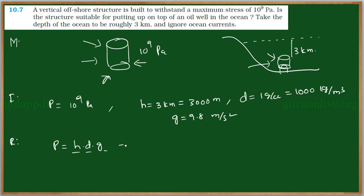After substituting this, we will get 3000 into 1000 into 9.8. So by simplifying this, we will get the answer as 2.94 into 10 to the power of 7 Pascals.